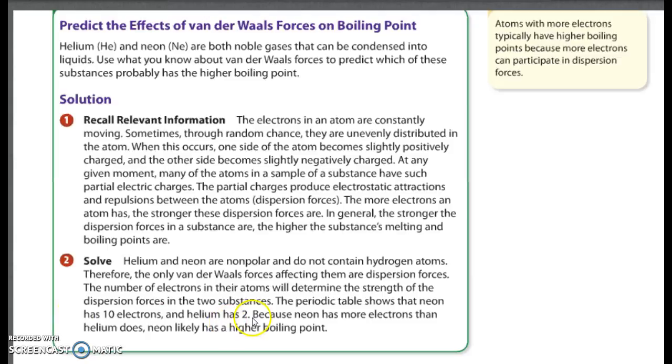So the only Van der Waals forces are going to be the dispersion. And we look, helium has two electrons, but neon has ten. So neon has more that can be at one side, so it's going to have a higher boiling point. Go ahead and hit pause and read the rest of this section.